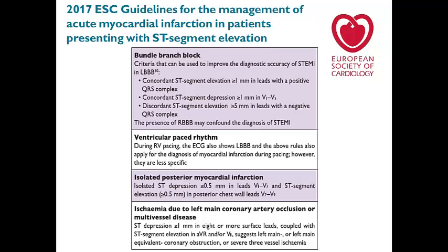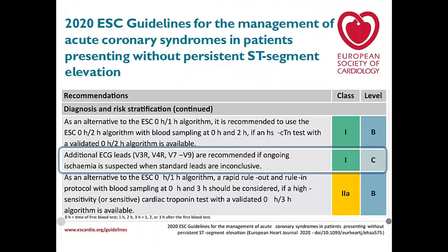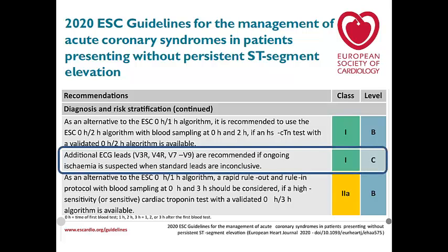In the 2017 ACC/AHA guidelines for STEMI, isolated posterior STEMI is diagnosed as isolated ST depression ≥0.5 mm in V1–V3 plus ST elevation ≥0.5 mm in posterior ECG leads. The 2020 ACC/AHA guidelines for non-ST elevation acute coronary syndrome recommend that additional right-sided and posterior ECG leads are indicated when ongoing ischemia is suspected but standard leads are inconclusive — a Class I recommendation to detect STEMI patients.